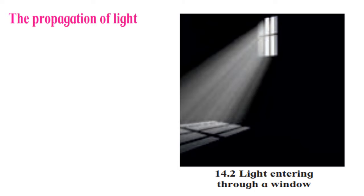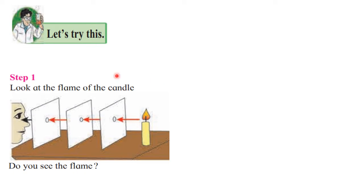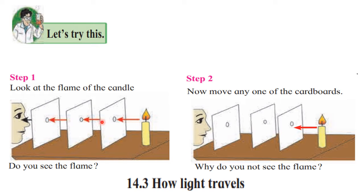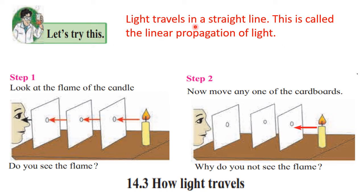Then we have studied about propagation of light. With various examples, we have seen that light always propagates in a straight line — that means light travels in a straight line. We can see light entering from the window in a straight line. In one experiment, when all the holes in the cardboards are in the same line, we can see the light of the candle. But when one of the cardboards is shifted and the holes are not in a single line, we cannot see the light. So, light travels in a straight line, and this is called linear propagation of light.